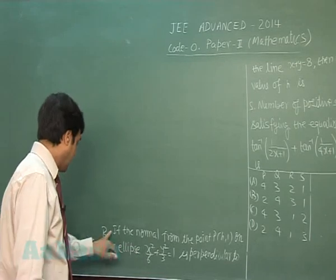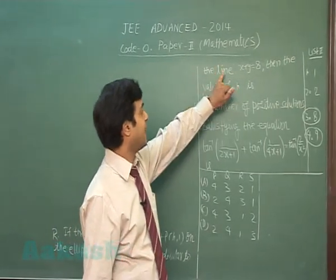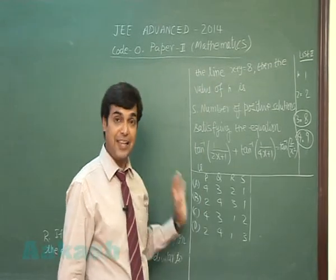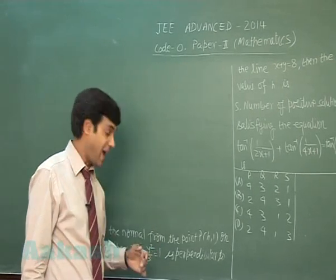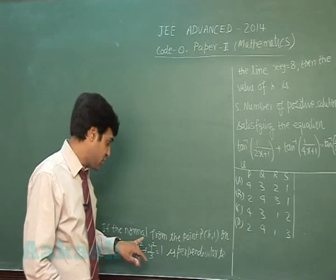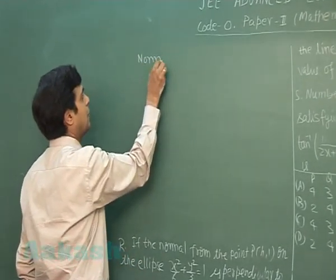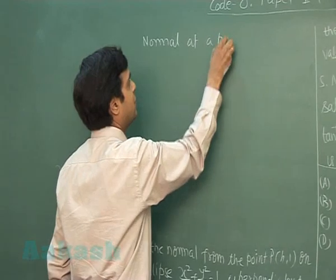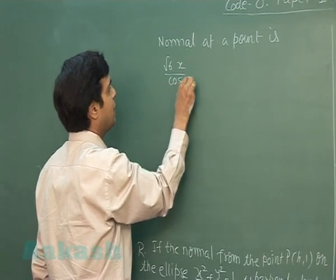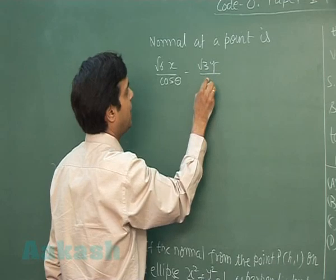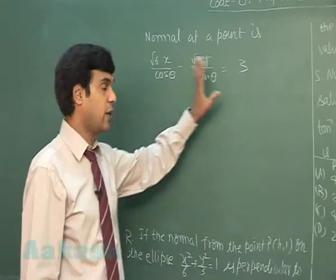For part R: if the normal from point P on the ellipse is perpendicular to the line x + y = 8, find the value of h. Consider a general point on the ellipse in the form (√6 cosθ, √3 sinθ). We can write the equation of the normal as: √6·x/cosθ − √3·y/sinθ = 6 − 3 = 3. This normal passes through the point (h, 1).